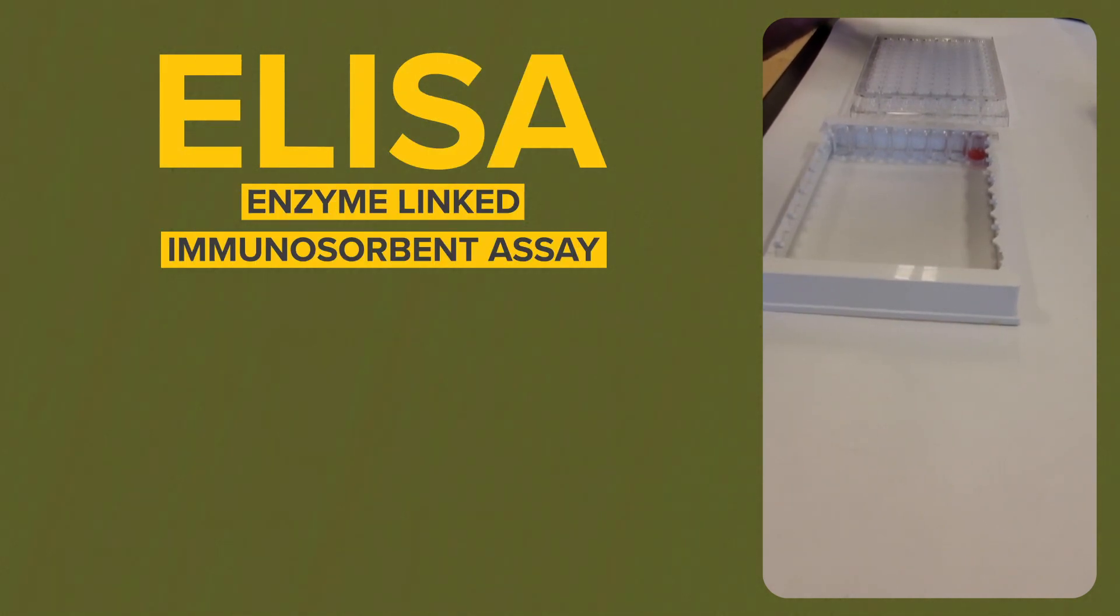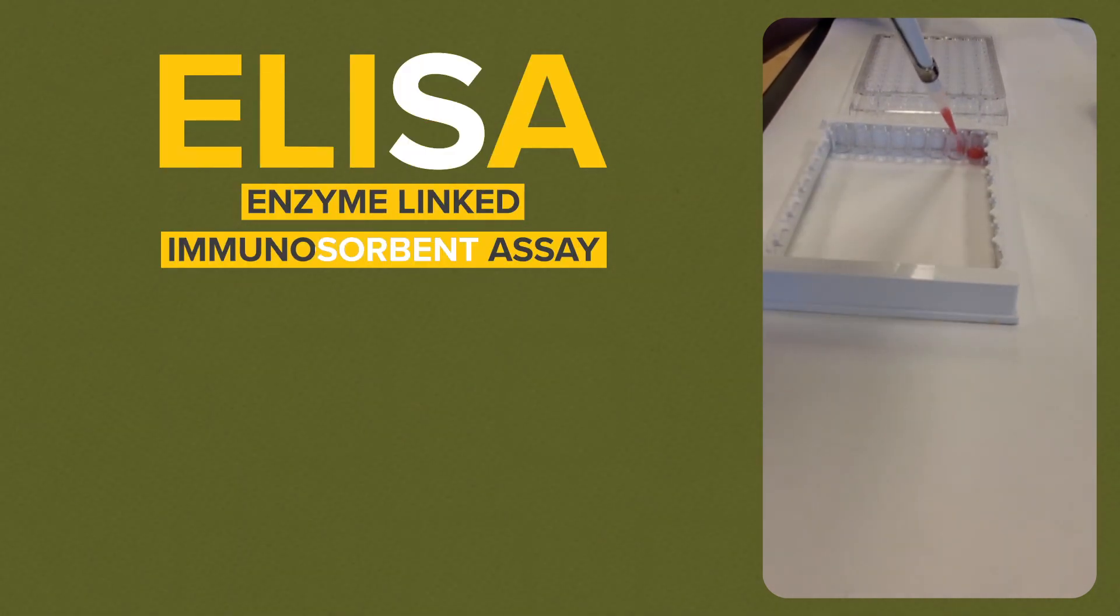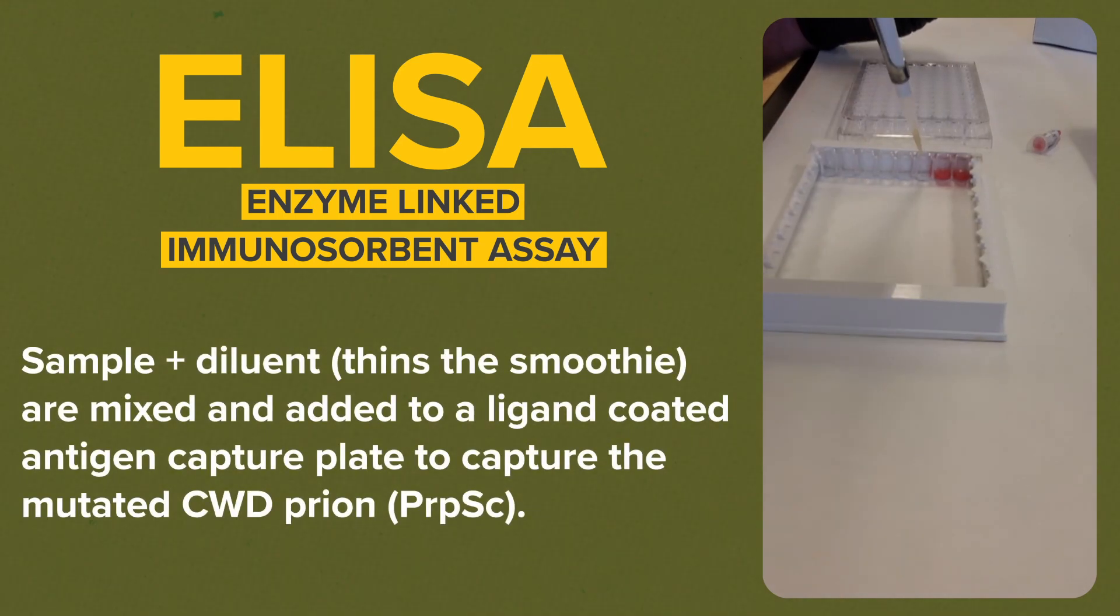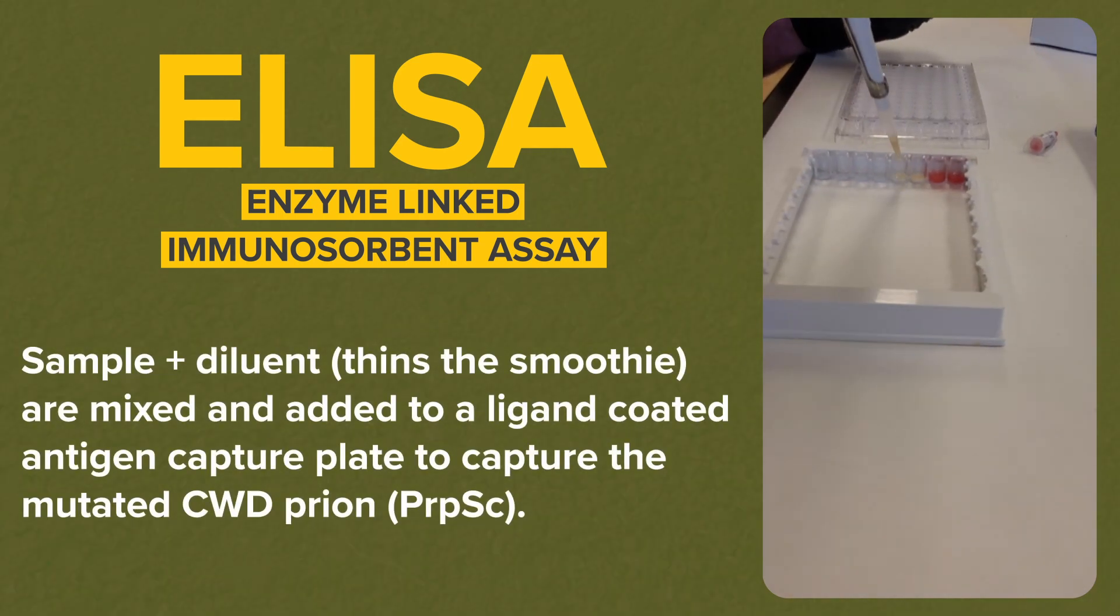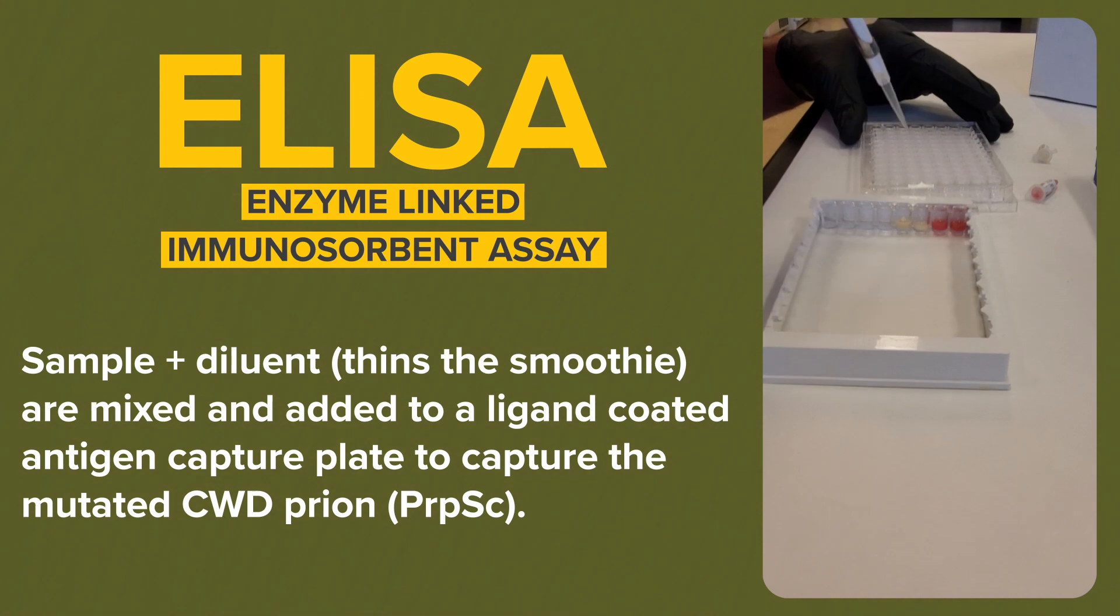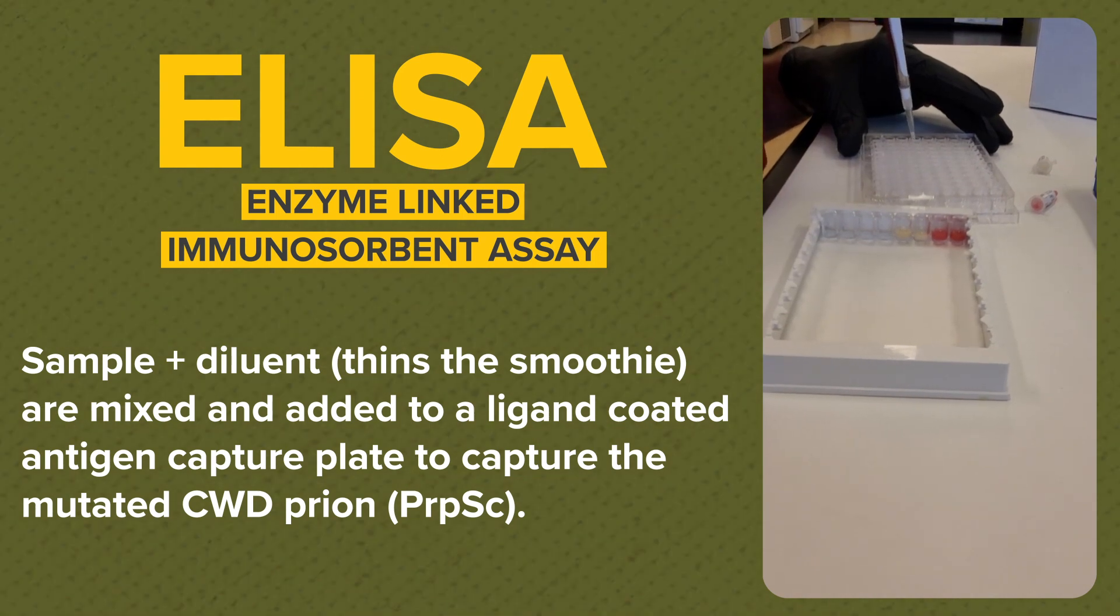To test the sample for CWD, we use ELISA, or the enzyme-linked immunosorbent assay. A diluent is mixed with the sample to thin it, and then we add a mixture to a ligand-coated antigen capture plate to capture the mutated CWD prion.